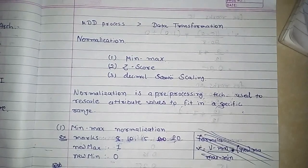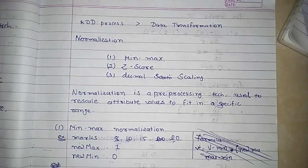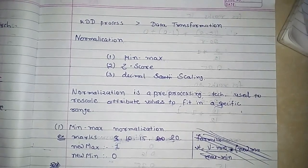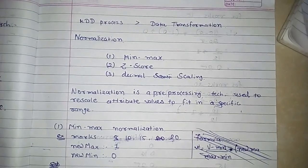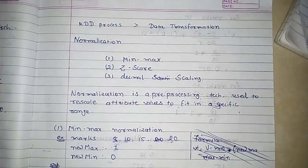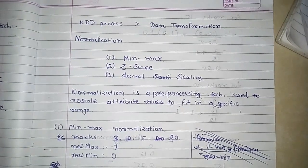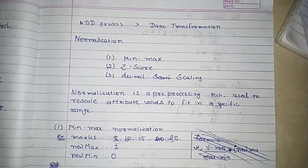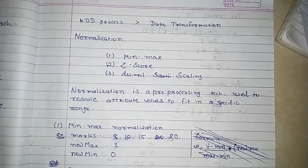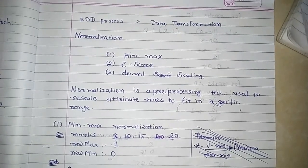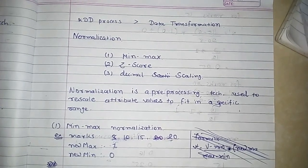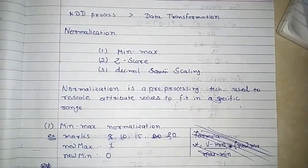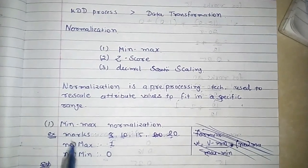Normalization is part of data transformation. Normalization is a pre-processing technique that is used to rescale attribute values to fit in a specific range. Normalization of data is very important when dealing with attributes of different units and scales.